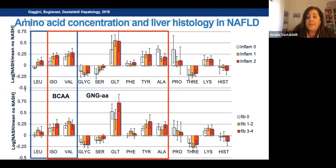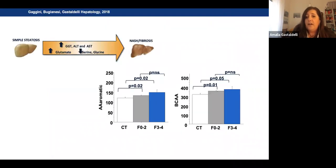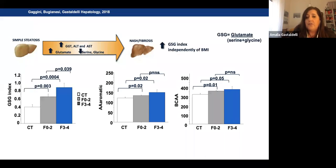The amino acids also increase with inflammation and fibrosis — on a log2 scale comparing NASH to non-NASH — while glycine and serine are decreased. We found that alanine and glutamate showed a stepwise increase with the degree of fibrosis in subjects with NAFLD and NASH. Most of these amino acids were related to liver transaminases — especially gamma-GT but also ALT and AST — and both aromatic and branched-chain amino acids were slightly increased with the degree of liver fibrosis.